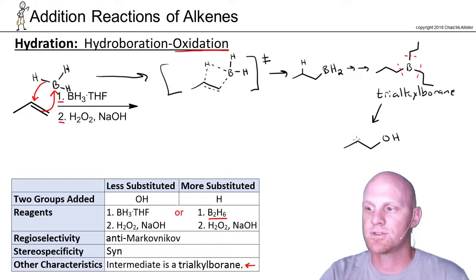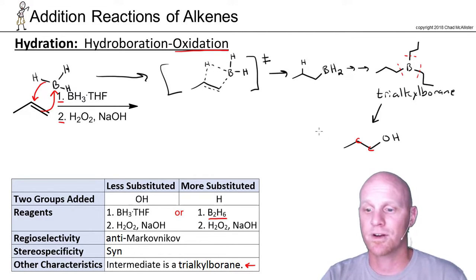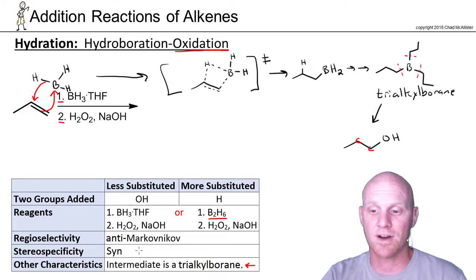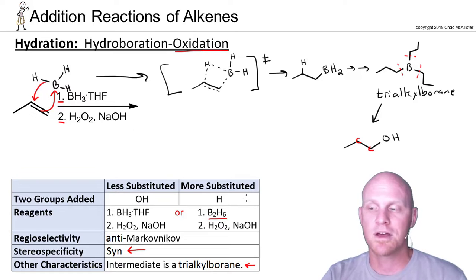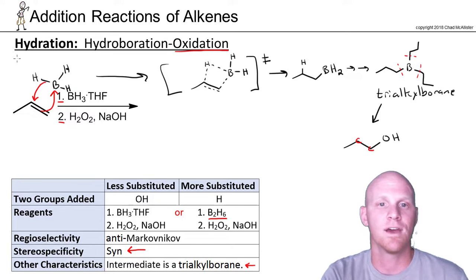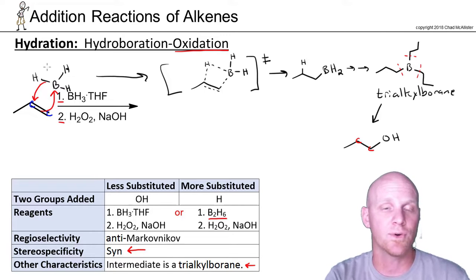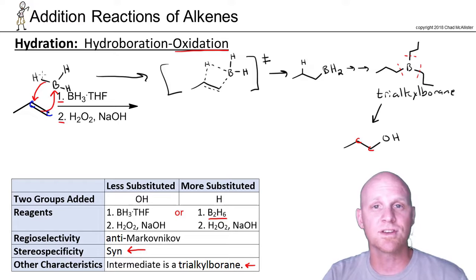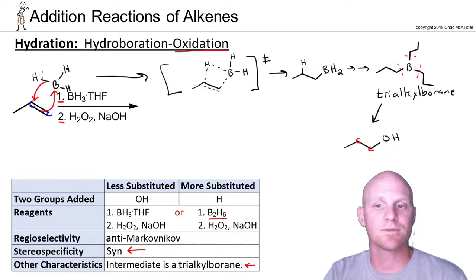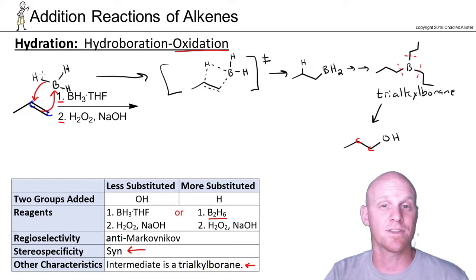In this example, the two carbons where we added the H and the OH neither turned into a chiral center, so stereospecificity doesn't matter here. But if it did, this is a syn addition — the H and the OH add to the same face. We can see why: both sp2 hybridized carbons are bonding to the boron and the hydrogen at the exact same time from the exact same molecule, so it has to come from the same face — either both wedges or both dashes. That's the hallmark of syn addition: bonding to two atoms from the same molecule simultaneously, and due to spatial restrictions they bond on the same face.